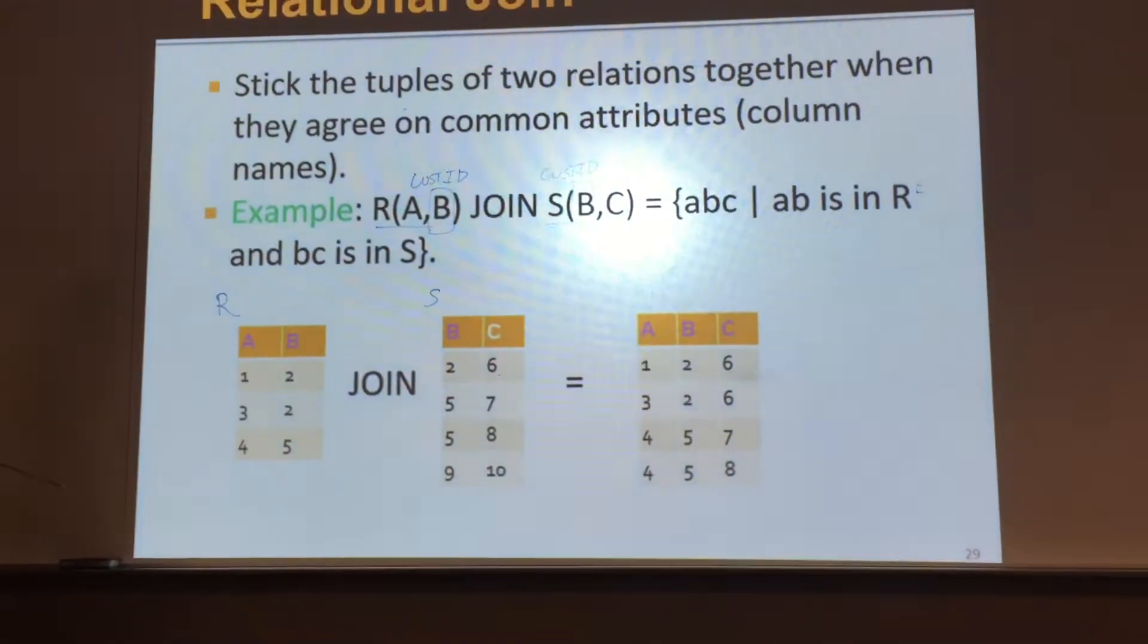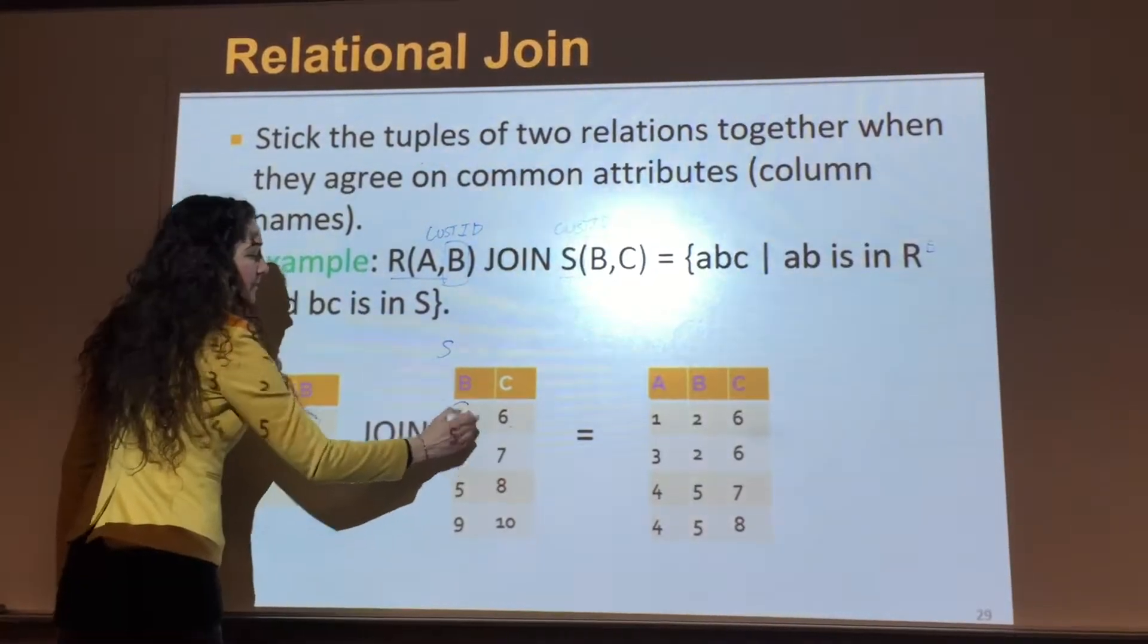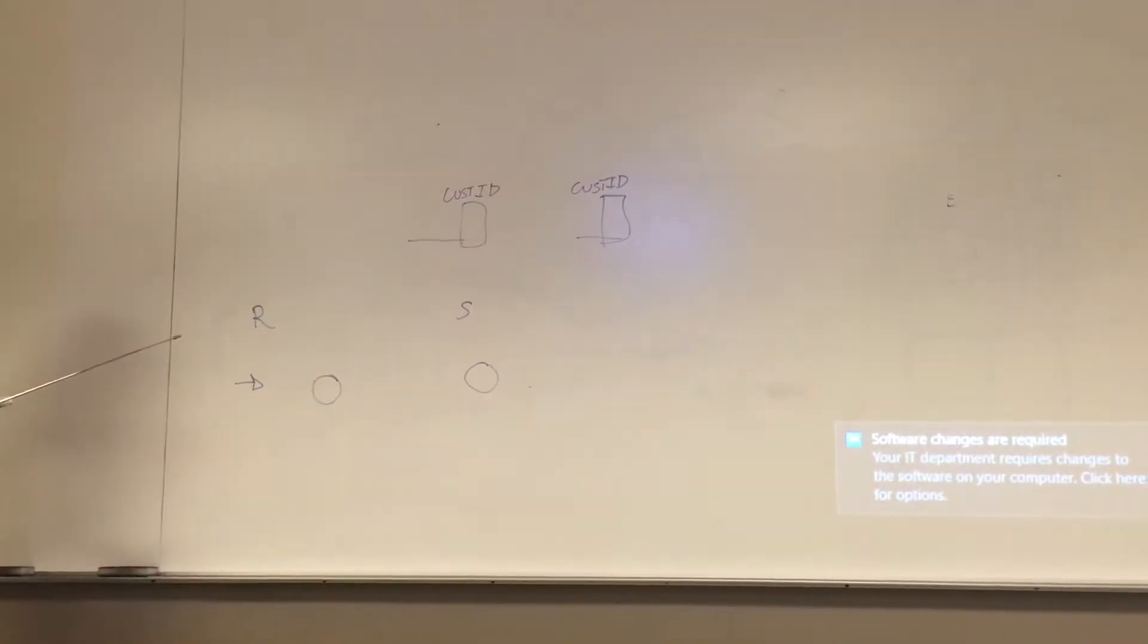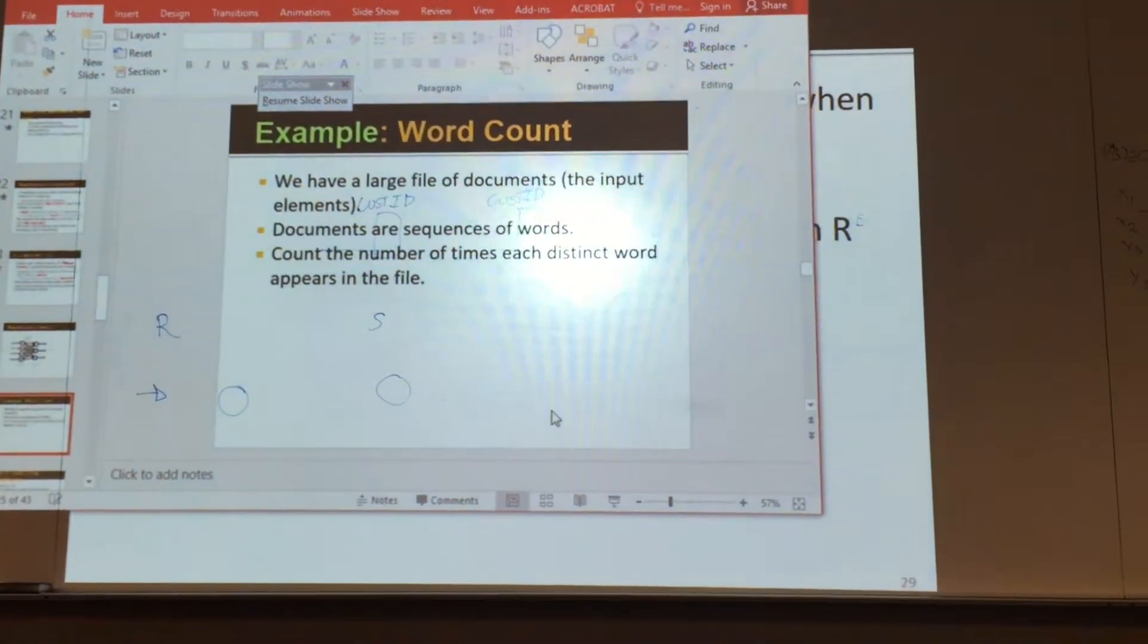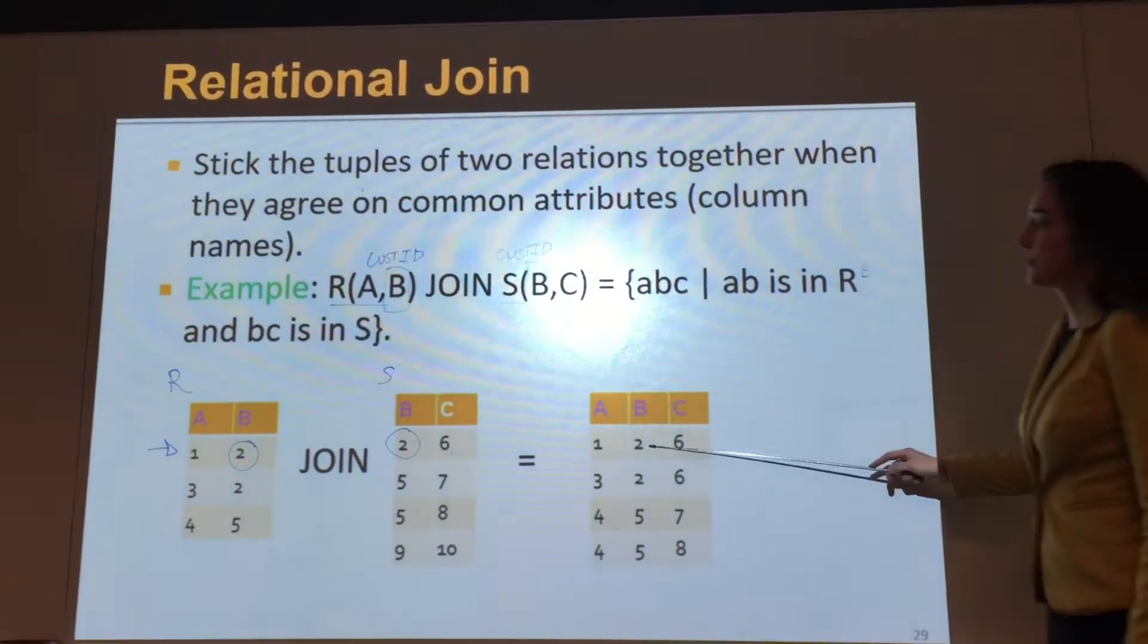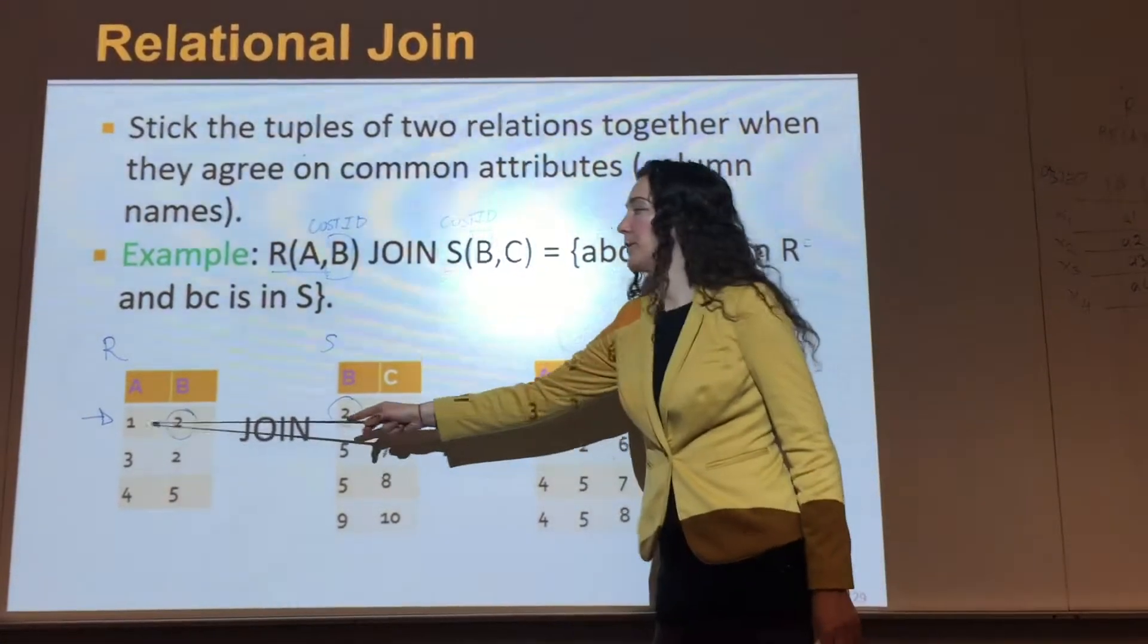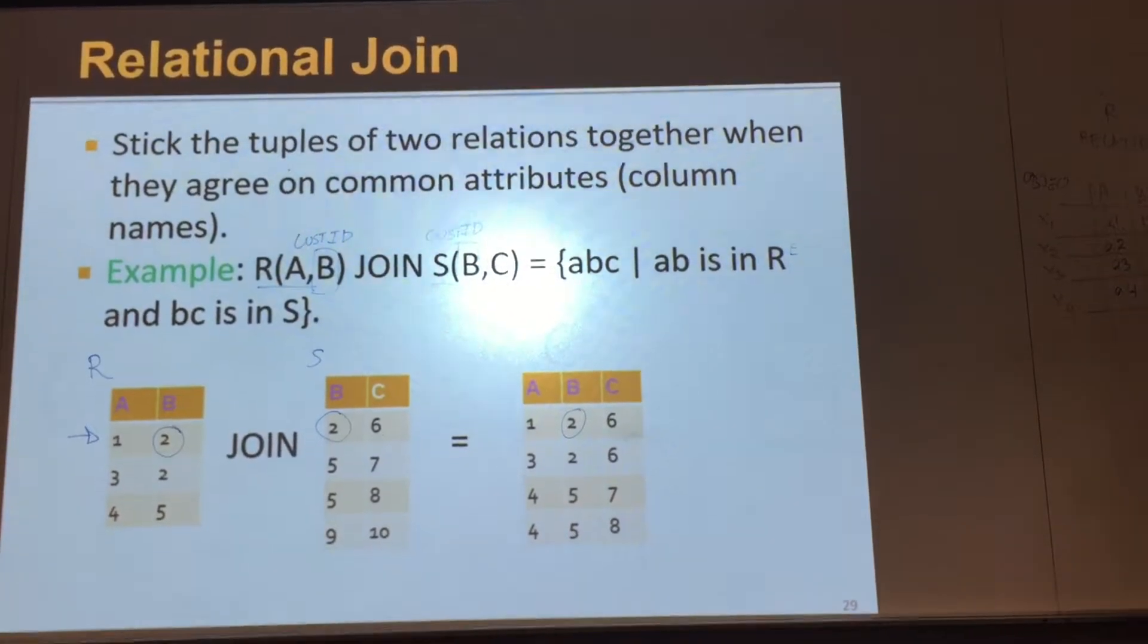Through this relational join, the rows where the customer ID matches. This is R, this is S. The customer ID is B. It is the common element. So this is the same customer. That information is for customer number two. So customer number two, from the first table, he gets one for A. From this. And from the second table, it gets six for C. So this is how this is done. So this joint operation will join these two tables.